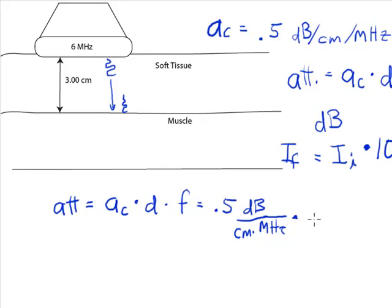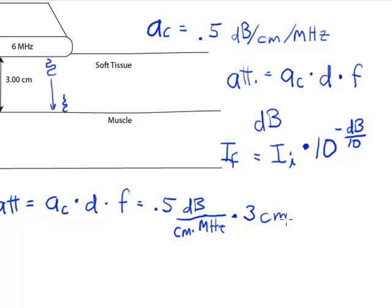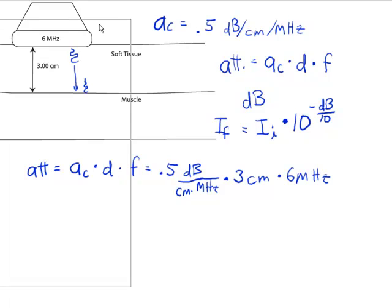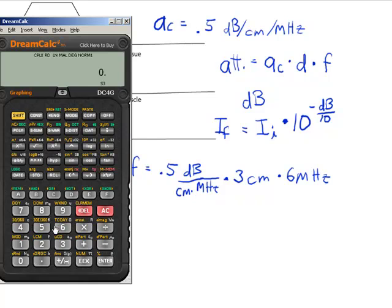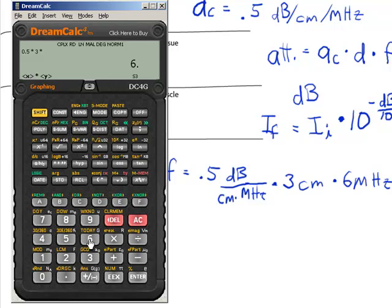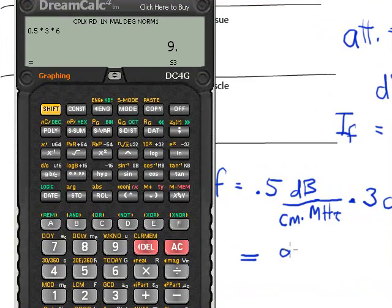And then I'm going to multiply by the distance, which is 3 cm in this case, and the frequency, which is 6 MHz. And so I'll bring in the calculator. Even though this one is probably easy enough, we didn't need to use the calculator. So I have 0.5 times 3 times 6. And that's equal to 9 dB of attenuation.